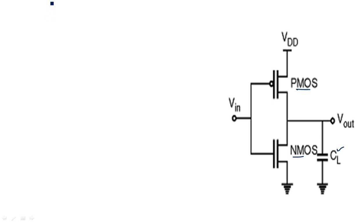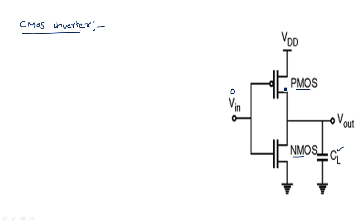Now in order to explain the operation of this CMOS inverter with capacitor load: initially when input is equal to zero, the PMOS transistor comes into ON state and NMOS comes into OFF state, so there will be a capacitor charging path from VDD through this transistor to the capacitor. During the charging period, the capacitor is initially at zero potential and as current flows through the ON PMOS transistor to CL, CL charges slowly.